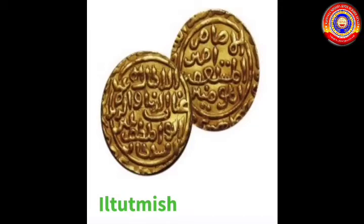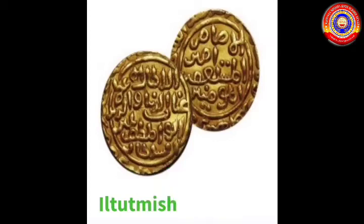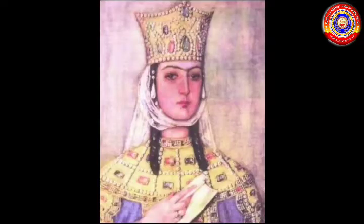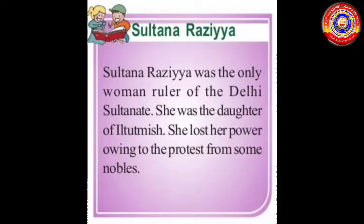After Qutbuddin Aibak, Iltutmish assumed power and conquered Multan, Lahore, and Bengal. He introduced a uniform monetary system in the regions under his control. Tanka and Jital were the newly introduced coins — Tanka was made of gold and Jital was made of silver. Then Sultana Razia, daughter of Iltutmish, became the woman ruler of Delhi.